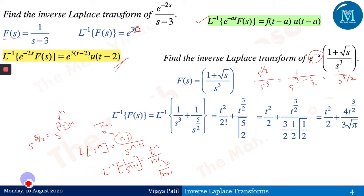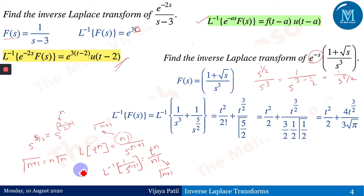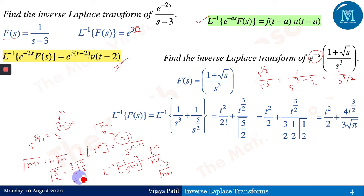Now Γ(5/2) = (3/2)·Γ(3/2) = (3/2)·(1/2)·Γ(1/2), and Γ(1/2) = √π. So Γ(5/2) = (3/4)√π, and the second term becomes (4/3)·t^(3/2)/√π. Thus f(t) = t²/2 + (4/3)·t^(3/2)/√π.